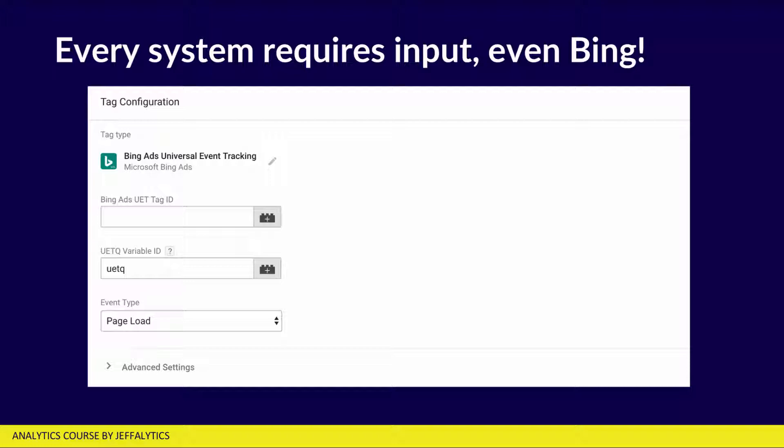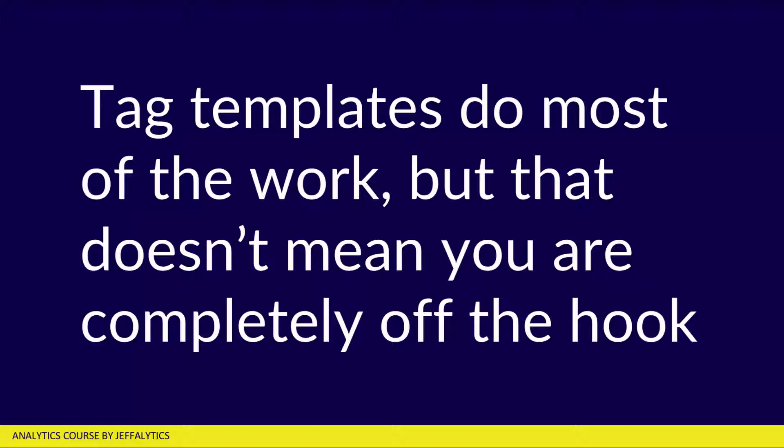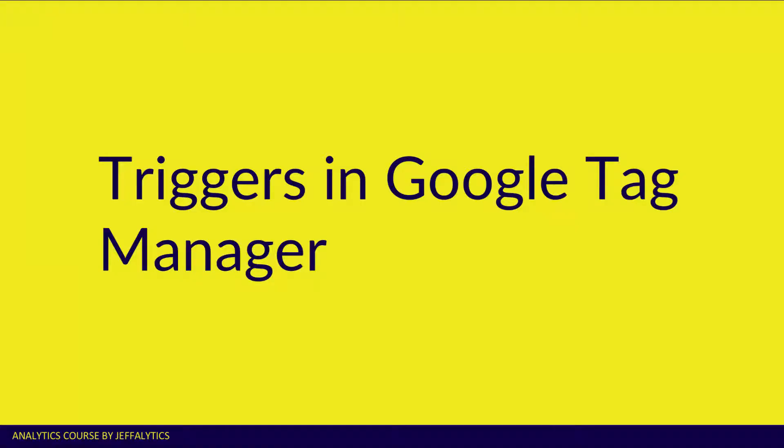So every system requires some type of input in order for these tag templates to work. But notice — I'm not asking you to put code in there at all. I'm just telling you that you can take a tag template, you can put in your tag ID, set up when it fires — which is a trigger — and these things are going to be live on your website whenever that page is loaded or whenever that trigger event happens. Tag templates do most of the work in GTM, but you still need to set up some kind of trigger for when those tags are going to fire.